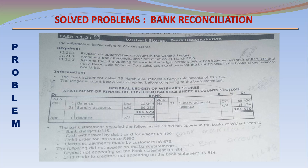Cash withdrawal by debit card for wages 4,129; debit order for insurance 992; electronic payments made by customers 8,673. The following did not appear on the bank statement: deposit not appearing on the bank statement 4,454; EFTs made to creditors not appearing on the bank statement 3,514.